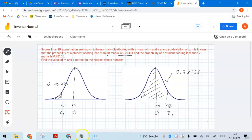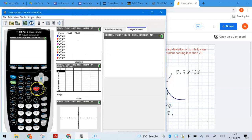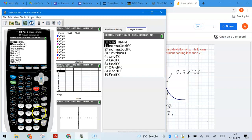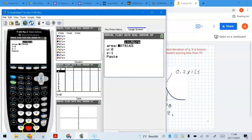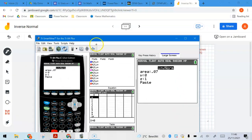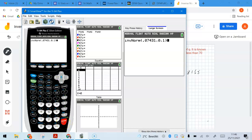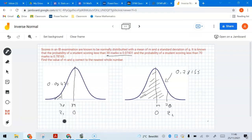And on my calculator, I'm going to go into second VARs, which is distribution. I'm going to choose inverse normal, number 3. And I'm going to enter 0.07431. That's the first Z value. And I'm going to have these set for 0 and 1. That's the standardized values. And this gives me a Z value, which is negative 1.444.